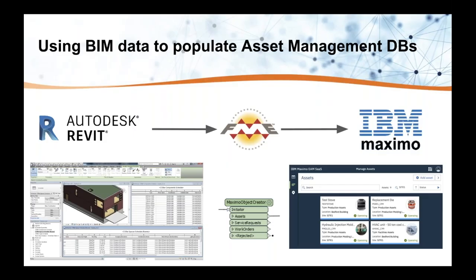Another thing we can do with this same information is use it to populate an asset management database — in this case, Maximo. We're reading from Revit and using the Maximo object creator, which is one of a series of transformers on the FME Hub that communicates with the Maximo product. Using these tools, you can take all of the Revit information on all the assets and plug it right into Maximo — so you don't have to key everything in by hand.